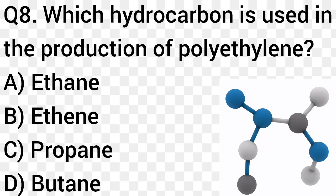Question number 8. Which hydrocarbon is used in the production of polyethylene? Option A: Ethene. Option B: Ethene. Option C: Propane. Option D: Butane. The right answer is option B, Ethene.